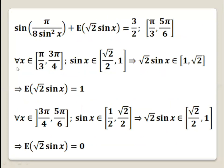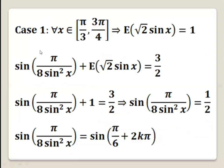Now let's take the first case, where the integer part is 1 in this interval. For every x in the interval from pi over 3 to 3 pi over 4, the integer part is 1. So we have sine of pi over 8 sine squared x plus 1 equals 3 over 2. Therefore sine of pi over 8 sine squared x equals 3 over 2 minus 1, which is one half.